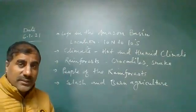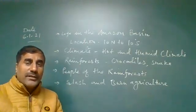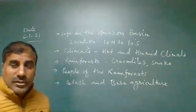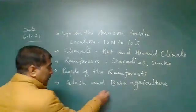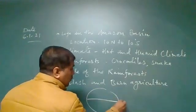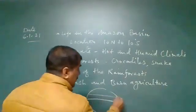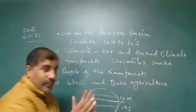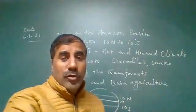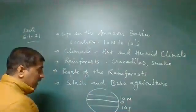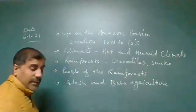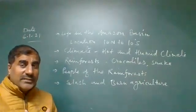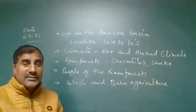Today we are going to discuss life in the Amazon Basin. The Amazon Basin is located from 0 degrees to 10 degrees on both sides of the equator — 10 degrees north and 10 degrees south. Amazon Basin's life is located close to the equator, so we need to think about what type of climatic conditions are found there.